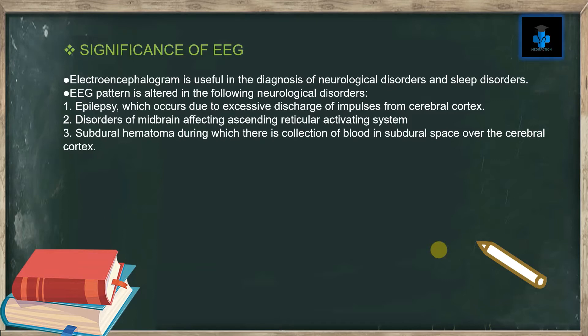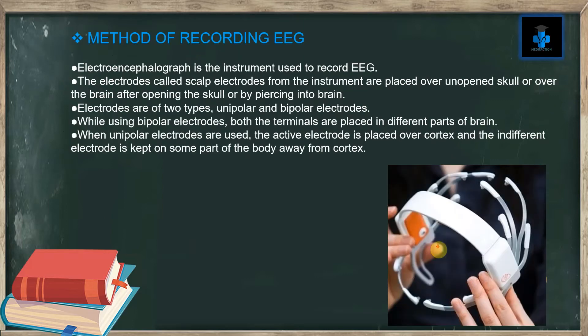Significance of EEG: the electroencephalogram is useful in the diagnosis of neurological disorders and sleep disorders. EEG pattern is altered in the following neurological disorders: number one, epilepsy, which occurs due to excessive discharge of impulses from the cerebral cortex; number two, disorders of the midbrain affecting the ascending reticular activating system; number three, subdural hematoma, during which there is a collection of blood in the subdural space over the cerebral cortex.